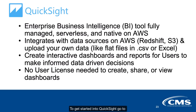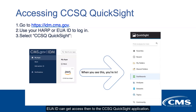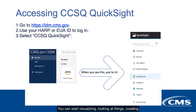To get started in QuickSight, go to ibm.cms.gov and log in. Anybody with a HARP or EUA ID can get access to the CCSQ QuickSight application. Once you select that, you'll see QuickSight and your options on the left panel, and you're in. You can start visualizing, looking at things, and creating visualizations.